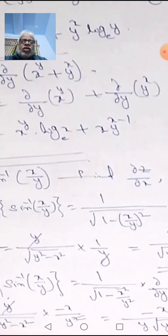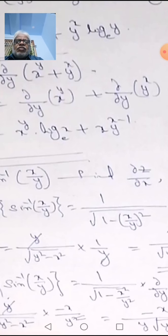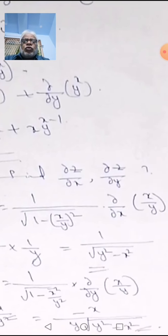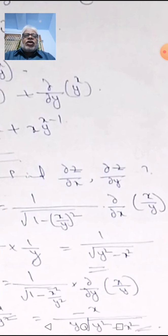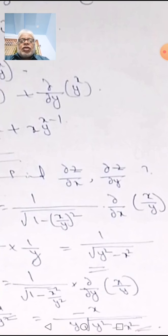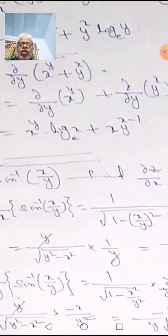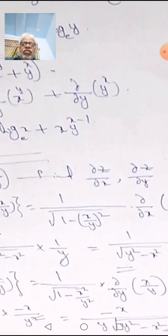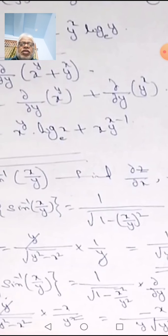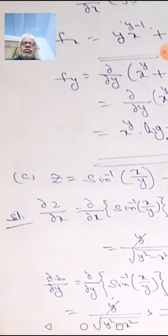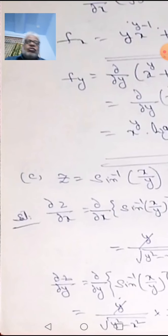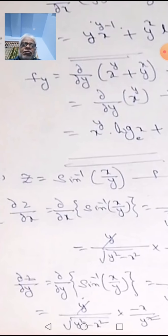Simplifying: 1/√((y²-x²)/y²). The square root of y² becomes y, so this can be written as y/√(y²-x²). Then dou/dou x of (x/y) is 1/y. The y's cancel, and finally we get dou z/dou x equals 1/√(y²-x²).